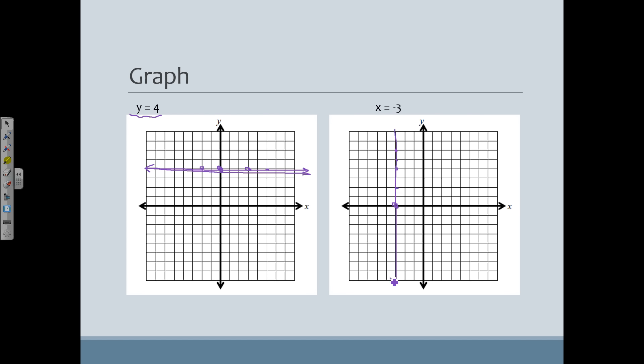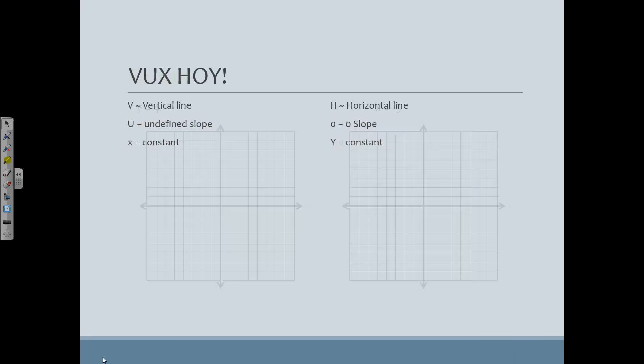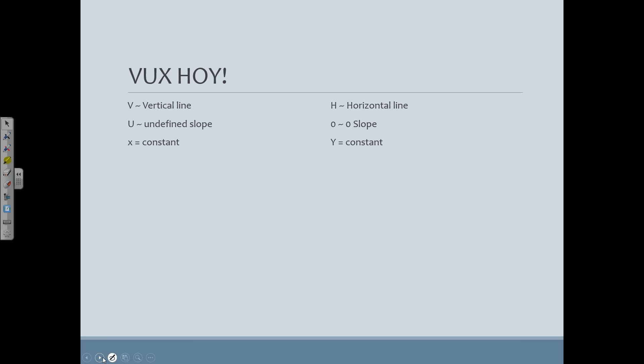Now this is something my algebra students in the past have seemed to struggle with. So I think I stole this from someone. I know I did. VUX HOY. I always say that's the battle cry of Ms. Craig's Wild and Wonderful Math World. So VUX, to help you remember, V is a vertical line. It has an undefined slope, which makes sense.